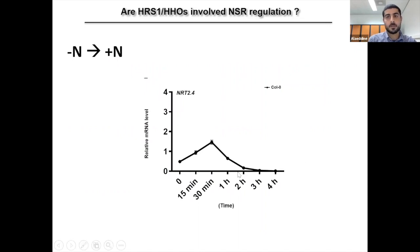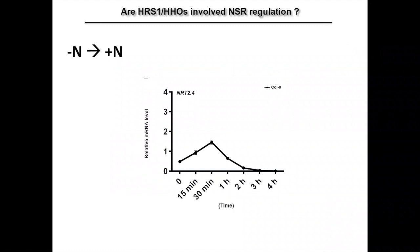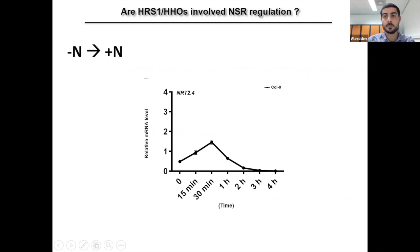Plants were first grown for 14 days on plus N, then transferred to minus N for three days, and then nitrate was applied for different time points.